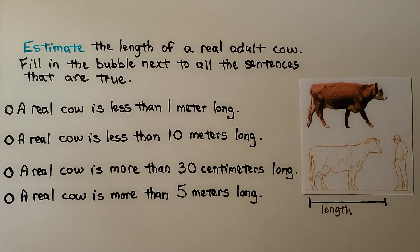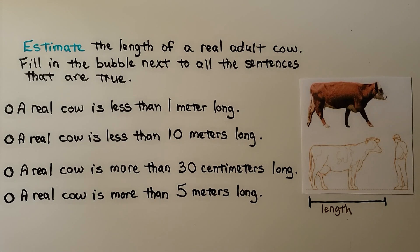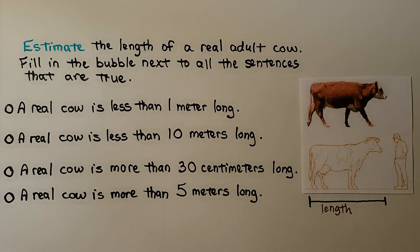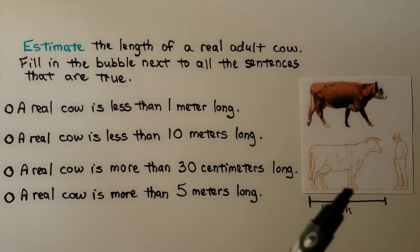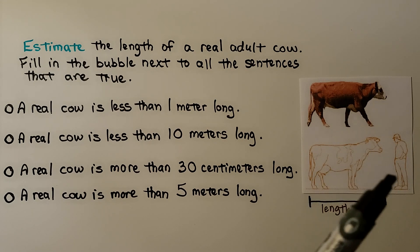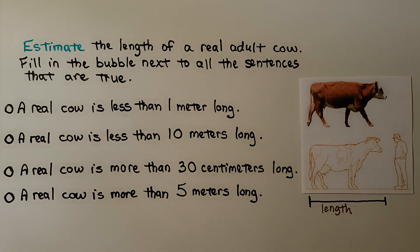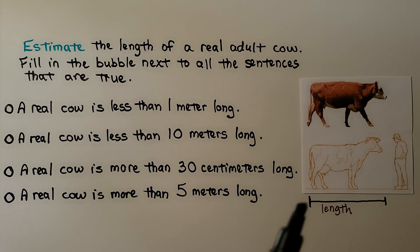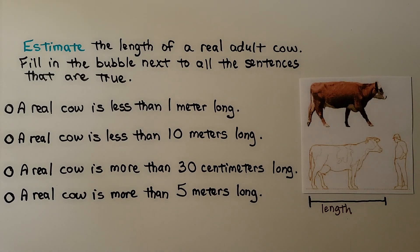Estimate the length of a real adult cow — fill in the bubble next to all the sentences that are true. Here's a real adult cow, and here's a grown man standing next to the cow to give you an idea of the size of a grown man compared to a real cow. Do you think a real cow is less than 1 meter long? I think a real cow is more than 1 meter.